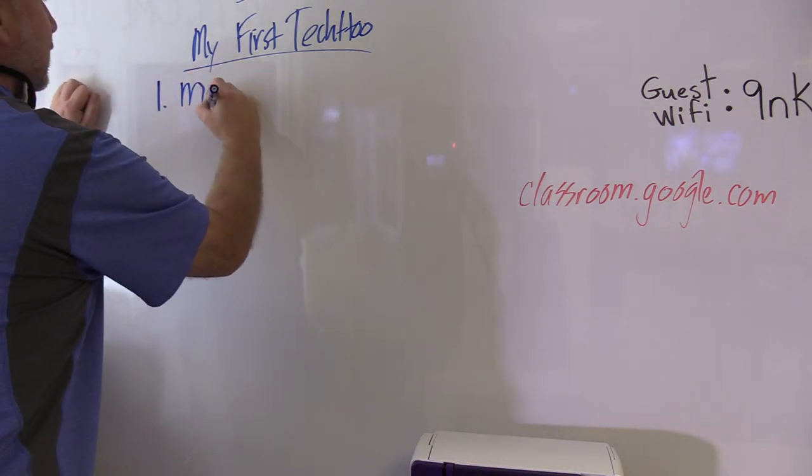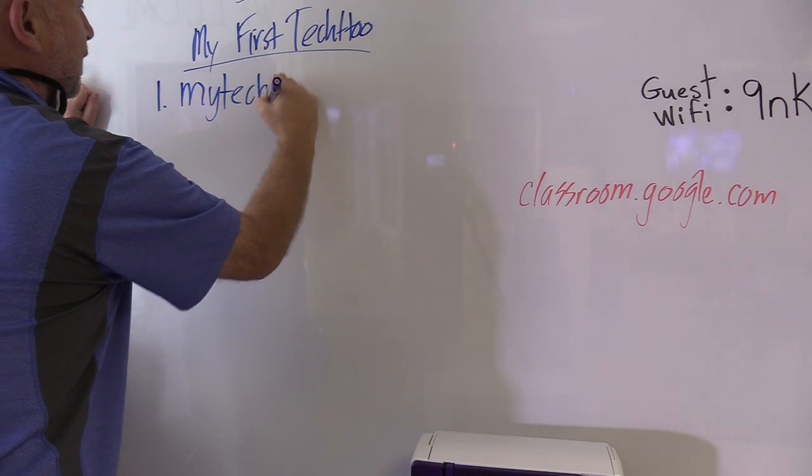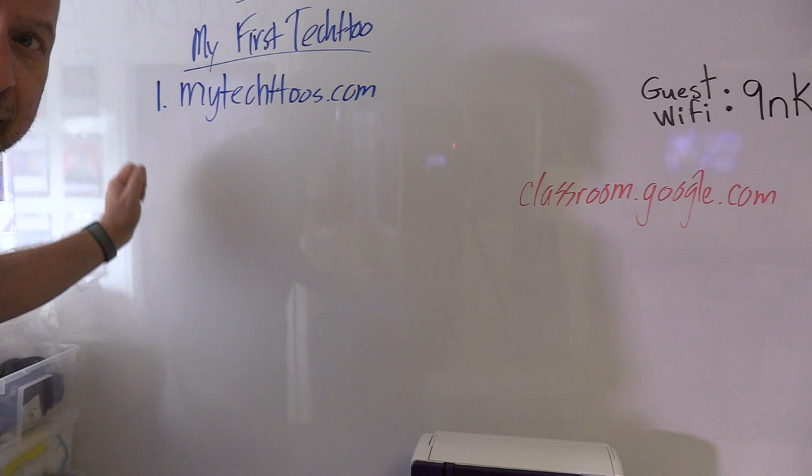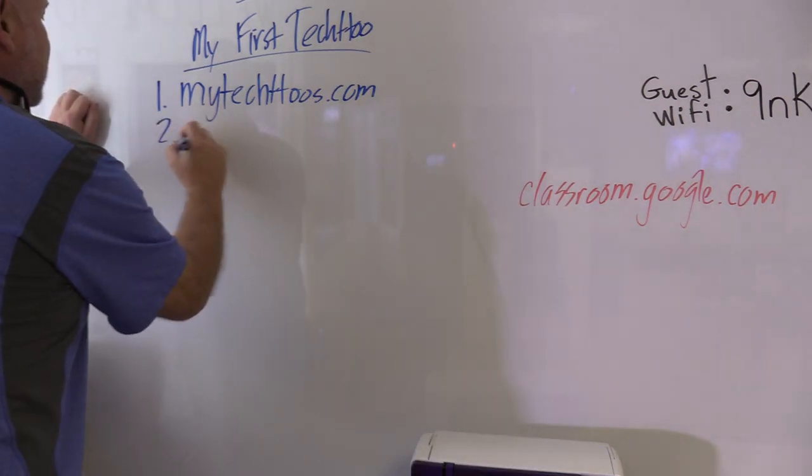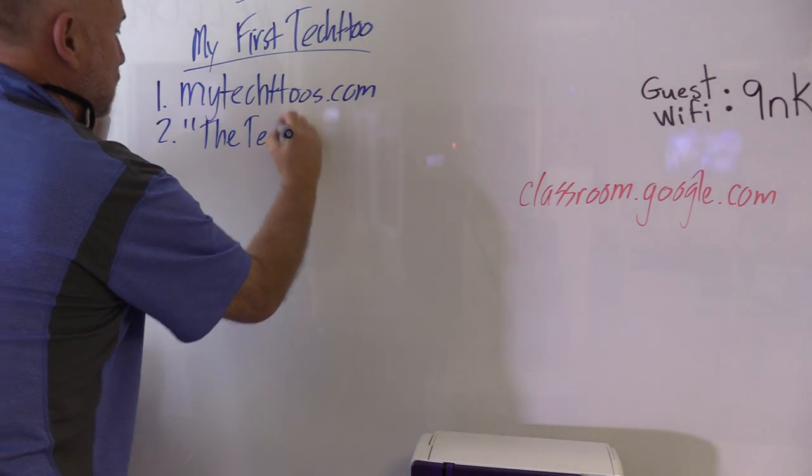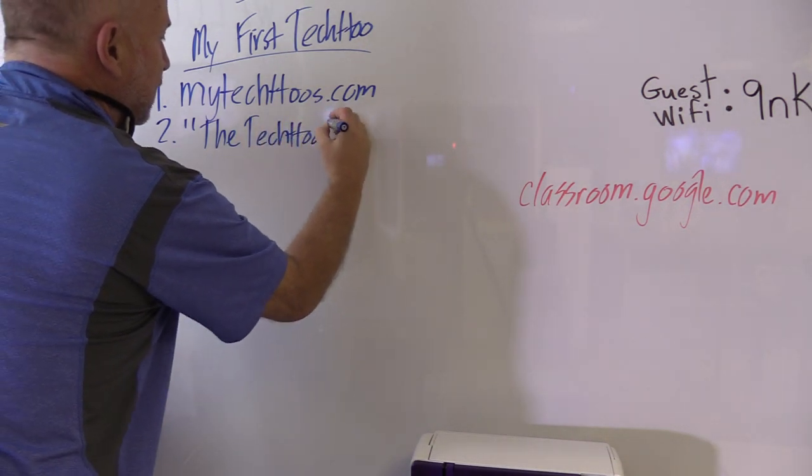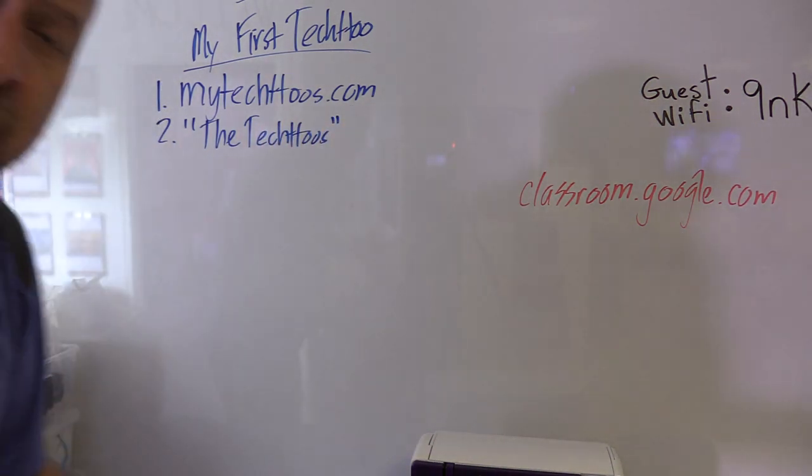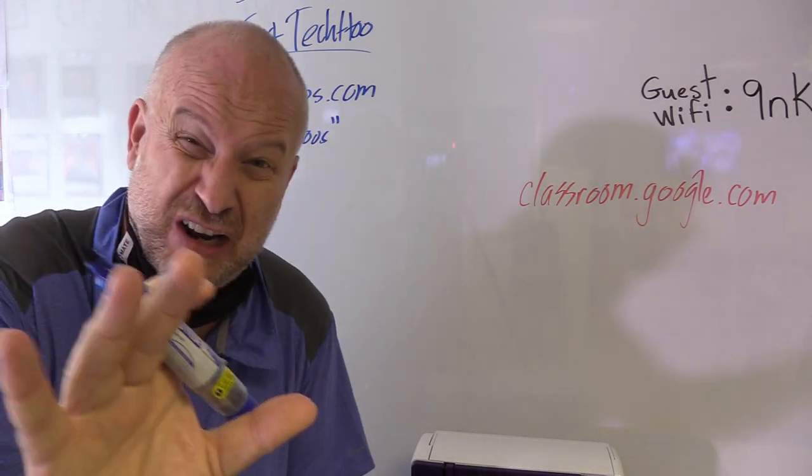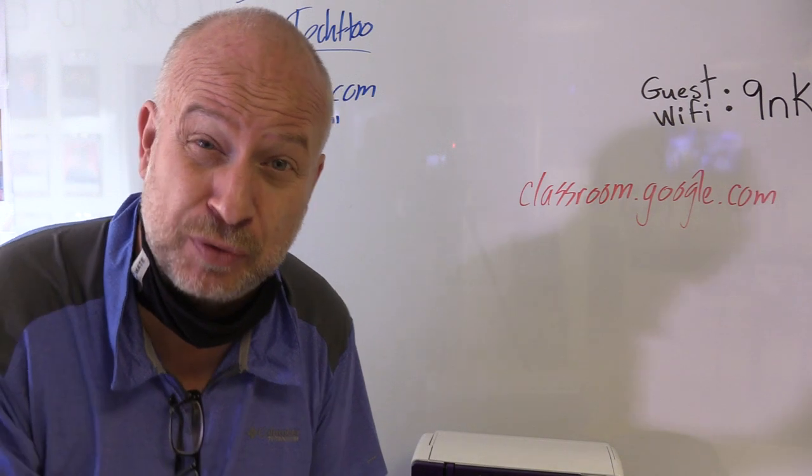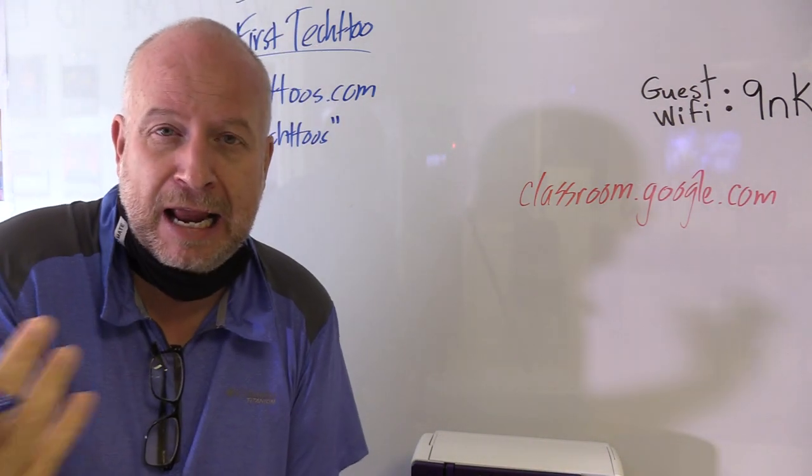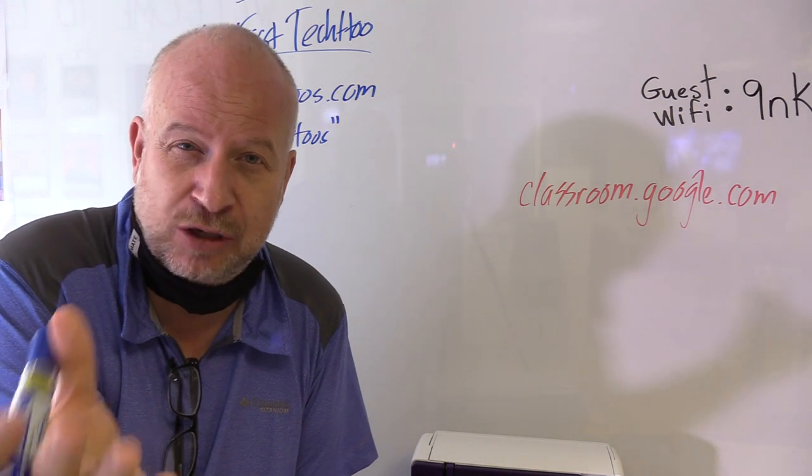You're going to go to the website, which is mytechtwos.com. On that page, there is a section called the tech twos. You're going to go there and navigate to the level one area. Because you're just starting out, you don't get to do level twos or level threes until you earn it. Go to level one and find one that you want.